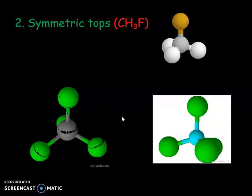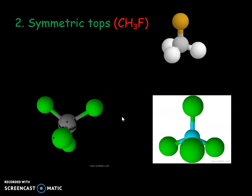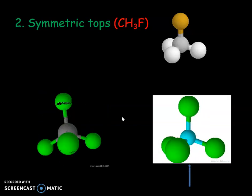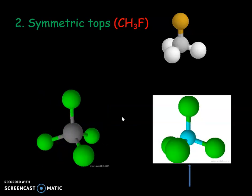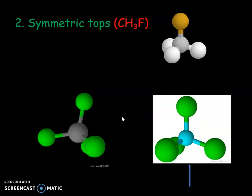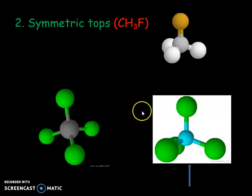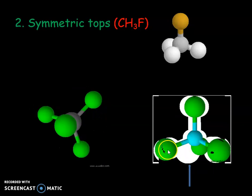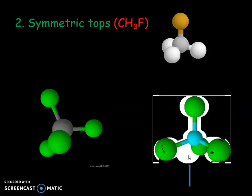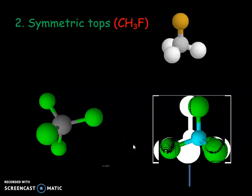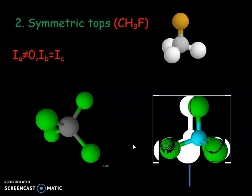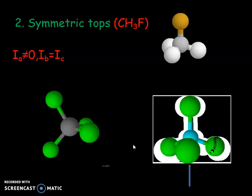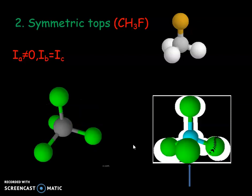But, the moment of inertia about the C-F bond axis is not negligible, in this case, since it involves rotation of three comparatively massive hydrogen atoms. Therefore, for symmetric tops, Ia not equal to 0, Ib equal to Ic.